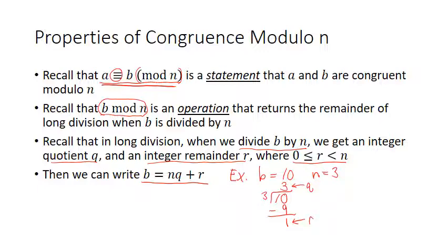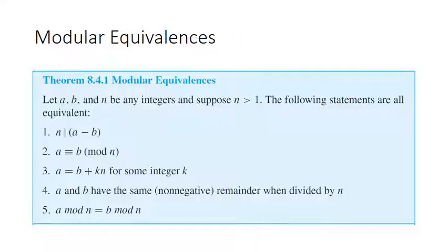Now let's go over theorem 8.4.1, modular equivalences, which outlines all the ways in which the two usages of mod n are related. Let a, b, and n be any integers with n greater than 1. The following statements are all equivalent. The congruence notation a ≡ b (mod n) is usually defined as meaning the first statement, but all five of these statements are equivalent.